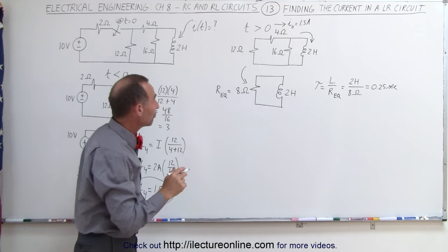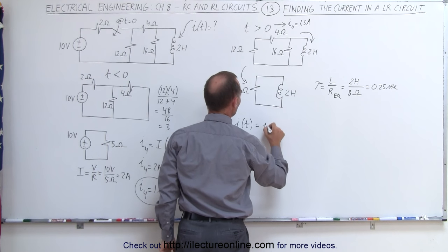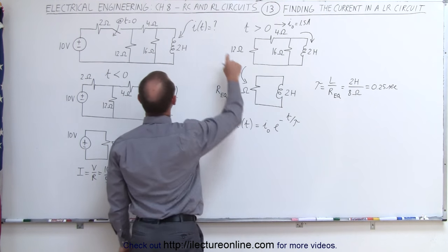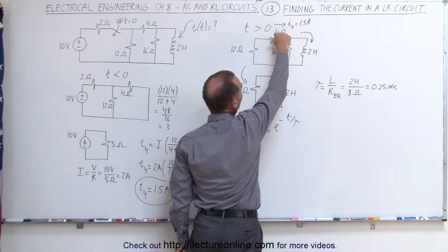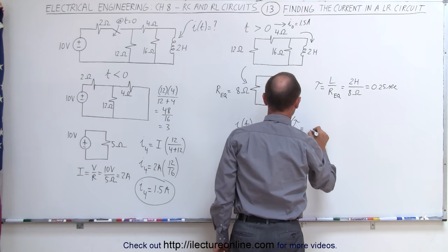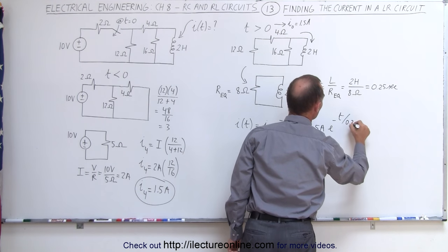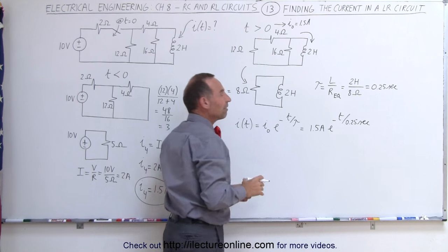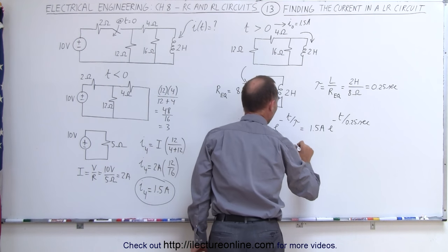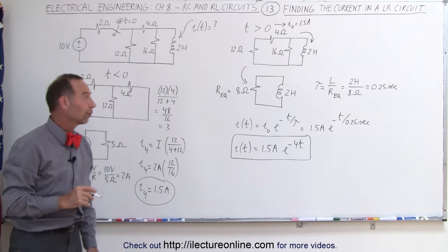Finally, we can find the equation for the current. I as a function of time, for the current going to the inductor, is equal to the initial current times e to the minus t over tau. The initial current is the 1.5 amps going to the 4 ohm resistor, since all of it goes to the inductor and none initially to the 16 ohm resistor. So I(t) equals 1.5 amps times e to the minus t over 0.25 seconds. Simplifying, I(t) equals 1.5 amps times e to the minus 4t. That is the equation describing the current through the inductor.